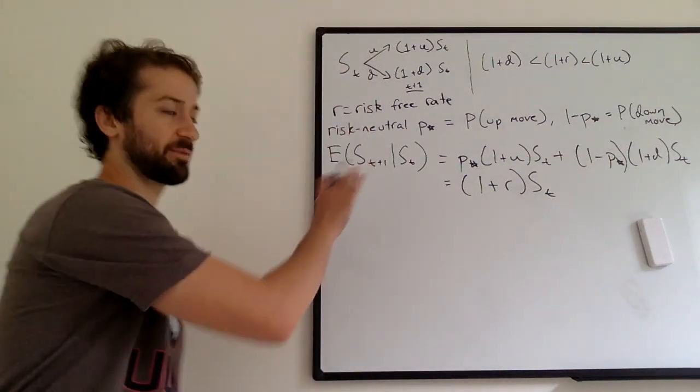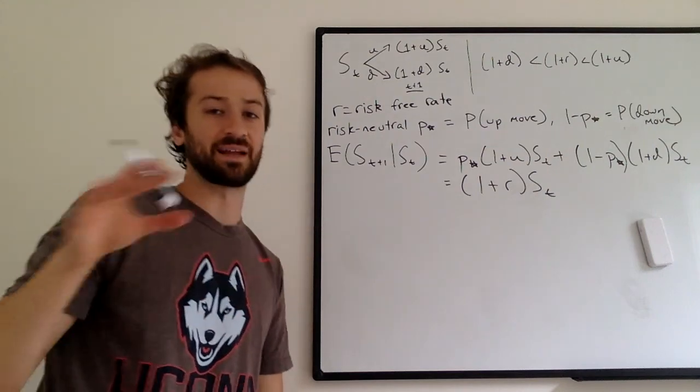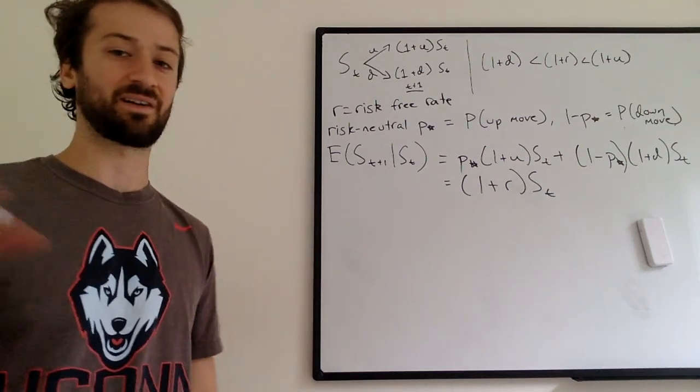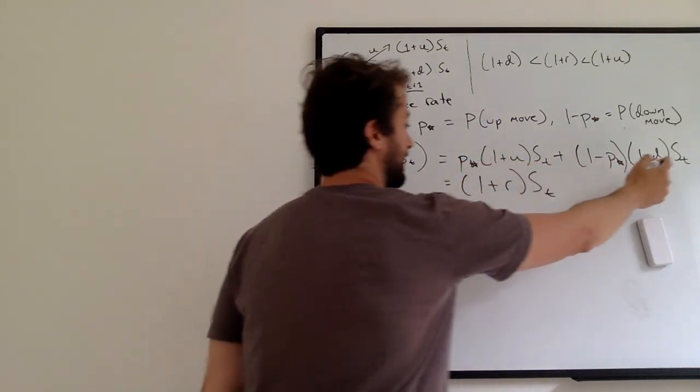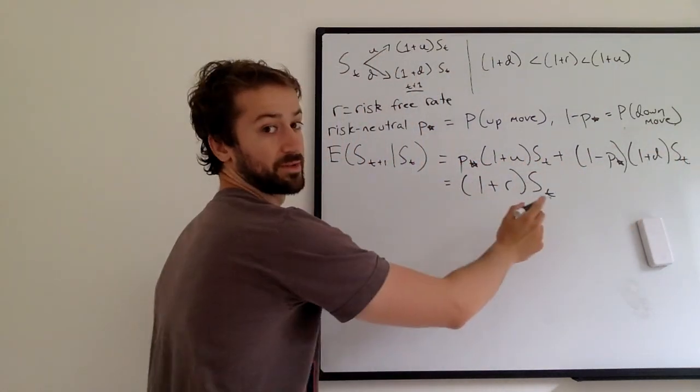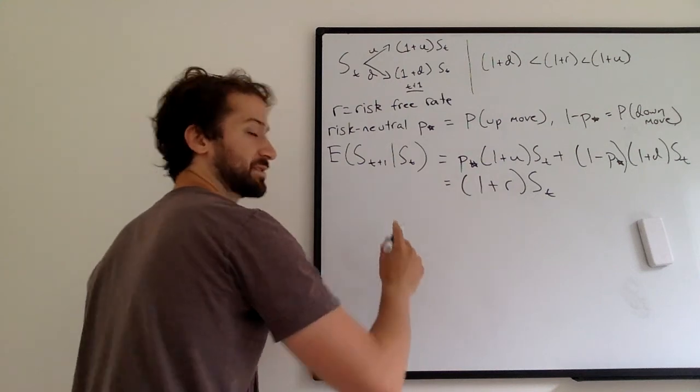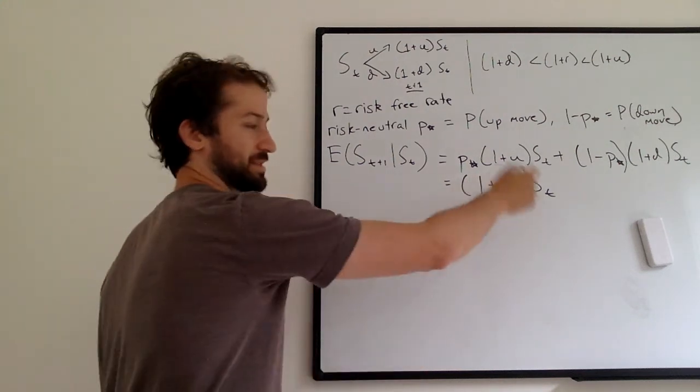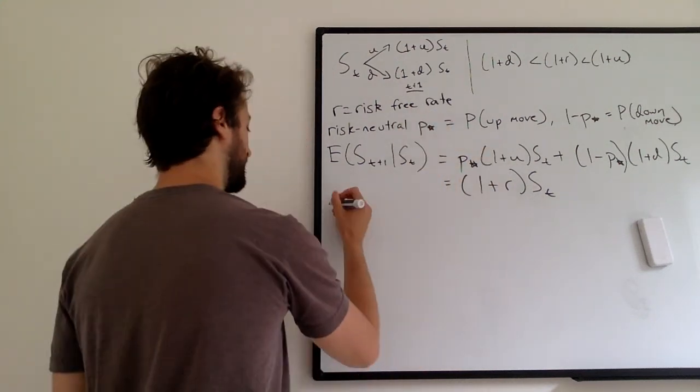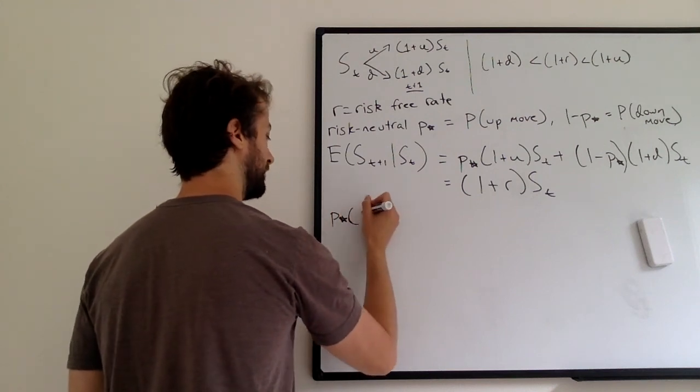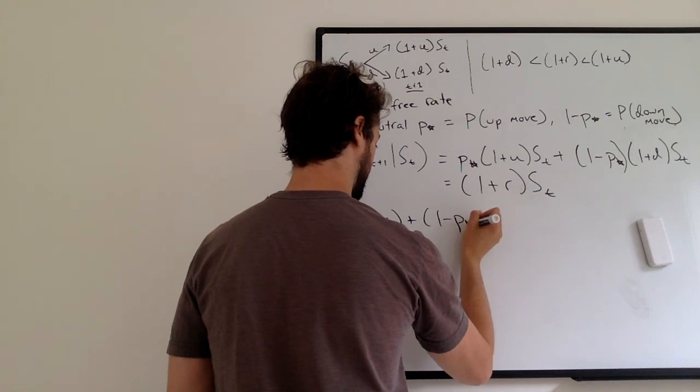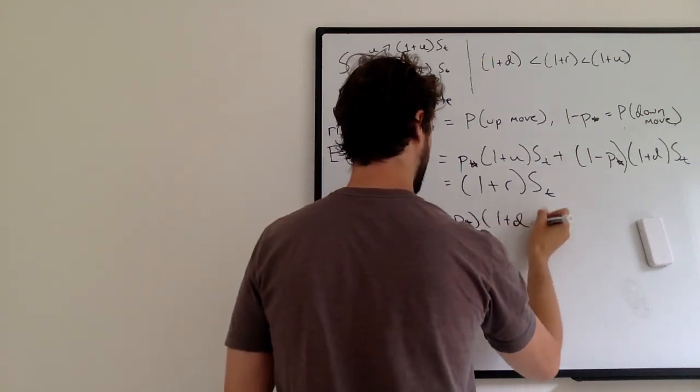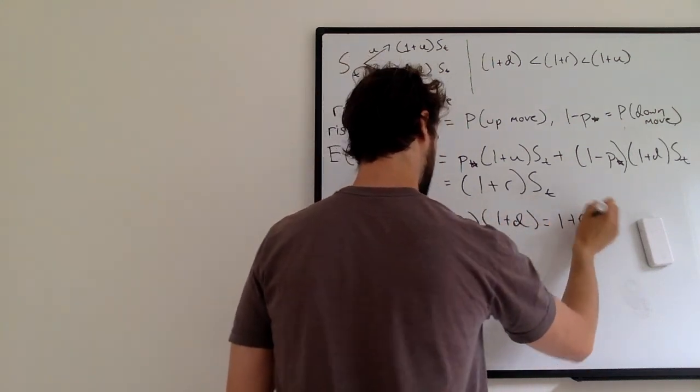So we've just been talking about P star, we haven't actually said what it is. We're just saying it's the P star that solves this. Let's actually go ahead and solve for P star. So we have this equation. P star, blah, blah, blah, equals one plus R S T. Let's just rewrite this equation, but divide by S T. All of these terms have S Ts, so they kind of come out. So it's just P star